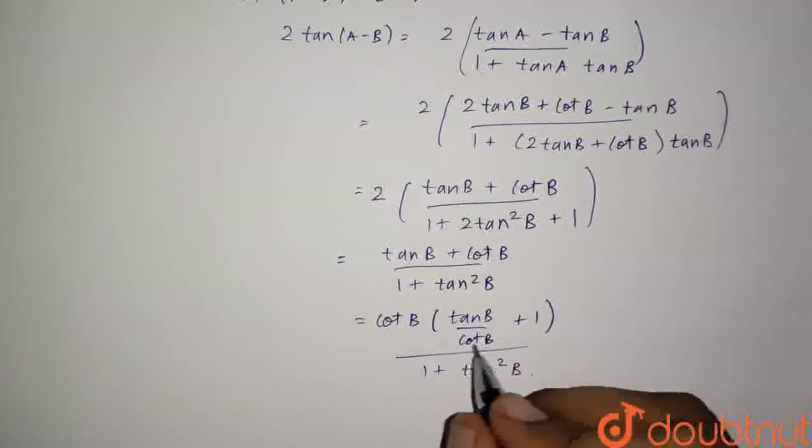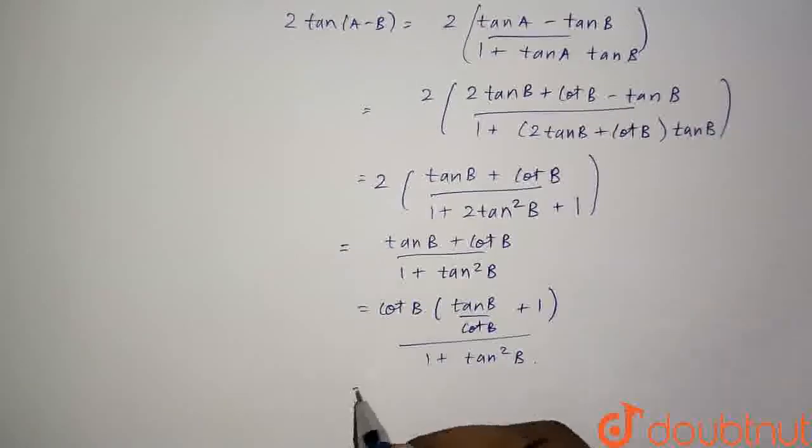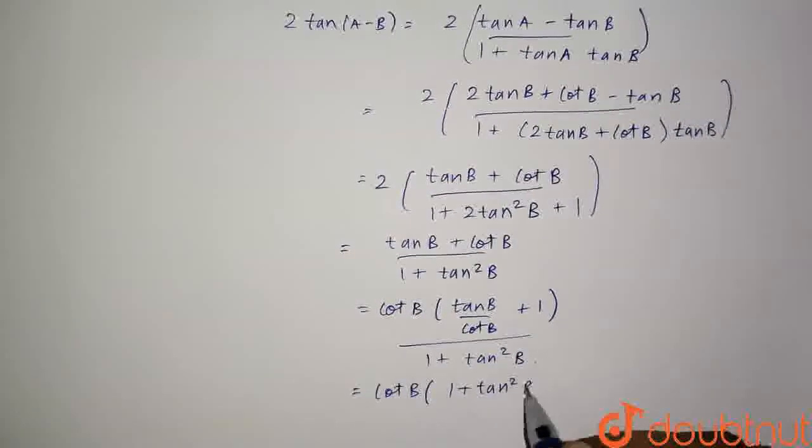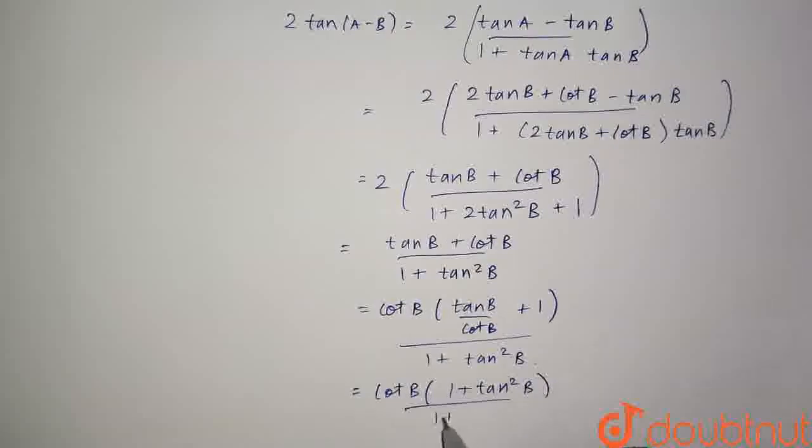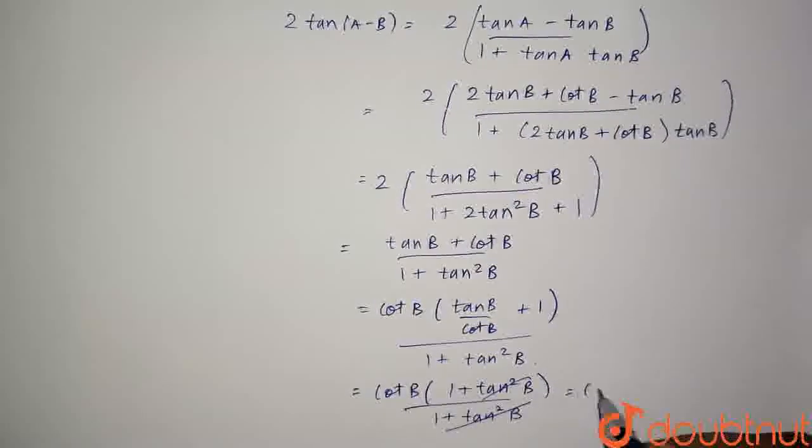Now tan b by cot b can be written as 1 upon tan b, which is tan square b. We will be left with cot b into 1 plus tan square b whole upon 1 plus tan square b. Both will get cancelled and we will be left with cot b, which equals the RHS.